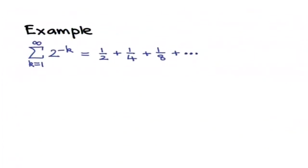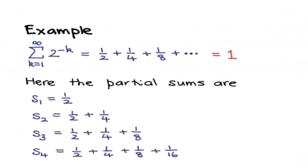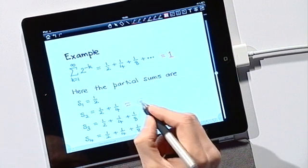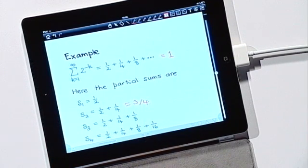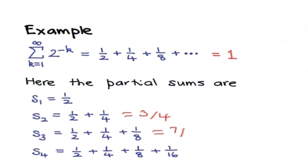Let's look at a couple of examples. This is an example of a series you may be familiar with, and you may already know that this series does converge and even know the value it converges to. Let's see how this series fits into the framework we've just introduced by looking at the partial sums. The first partial sum is simply the first term of the series. The second partial sum is the sum of the first two terms. The third partial sum is the sum of the first three terms, and the fourth partial sum is the sum of the first four terms.